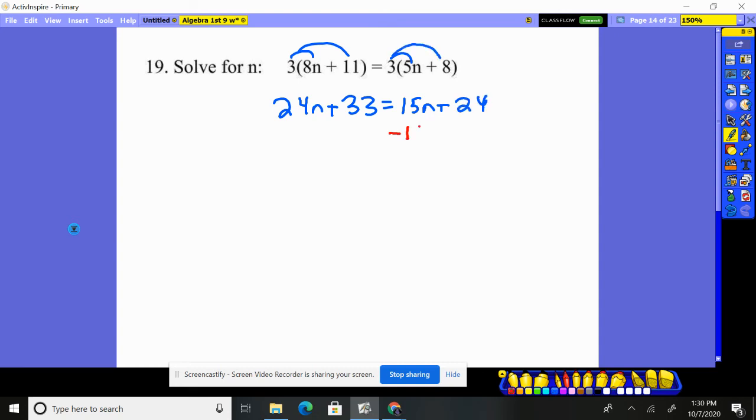I'm going to move my smaller variable over is what I like to do. Just by chance, they're going to the left each time. Could go to the right. Doesn't really make any difference. Again, as long as you get all variables on one side, all numbers on the other.